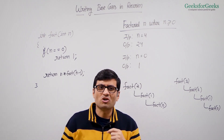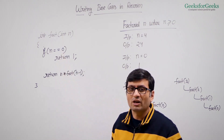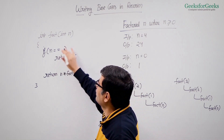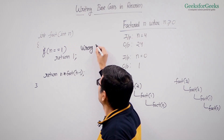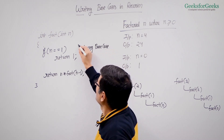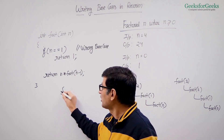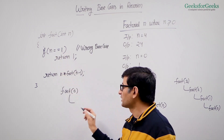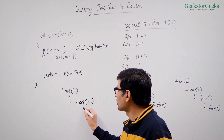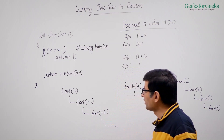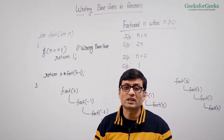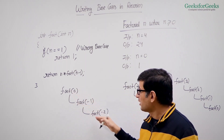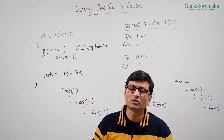Now imagine somebody writes the wrong base case — if somebody writes n equal to 1 instead of n equal to 0, what will happen when the test case has n equal to 0? With that wrong base case, calling factorial of 0 will not hit the base case, so it calls factorial of minus 1, which calls factorial of minus 2, and so on — it never terminates. In C++ you will get a segmentation fault, and in Java you will get a stack overflow exception because the recursion call stack will fill up with memory until it terminates with an error.